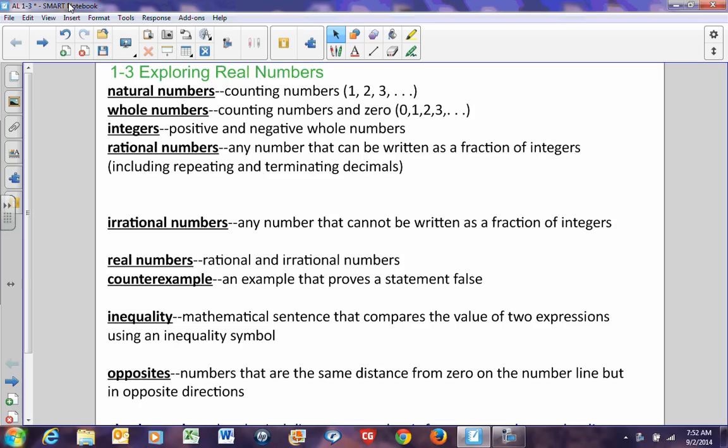Natural numbers are counting numbers, 1, 2, 3. When you count, you usually start with 1.